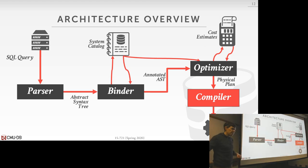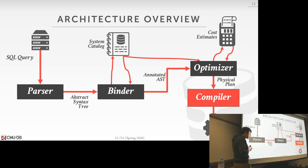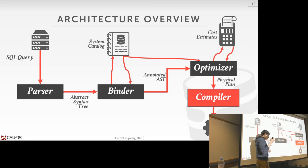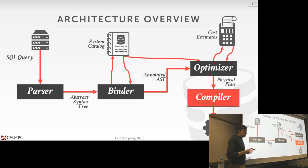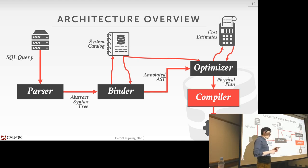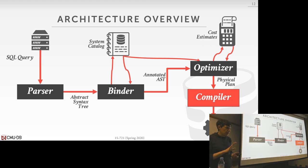Q: How does memory work when you compile code — if you have global data structures, how do you know where they are in compiled code? A: The compiled code can invoke anything running inside your database system — you wouldn't have an arbitrary memory address; instead you'd have a way to link it with a function you can call to get access to the object. It's the same as linking arbitrary C++ with an existing library. The ABI of Linux or your OS handles all that for you.